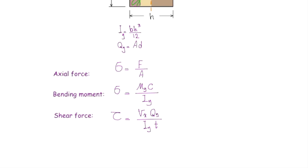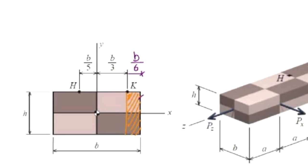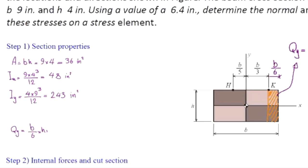Knowing this fact sheet, we can implement it to solve the problem. We have determined Ix and Iy. For determining Q about the y-axis, we cut this section passing through point K parallel to the y-axis, and calculate Q for that hatched section. The area is B/6 times H, and the distance of the centroid to the centroid of the entire section is B/3 plus half of B/6, which is B/12. Plugging in the values gives Qy = 22.5 cubic inches. Q about the x-axis would be zero, because cutting parallel to x gives zero area at point K.